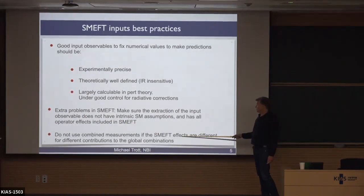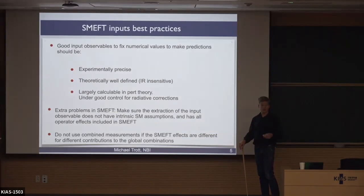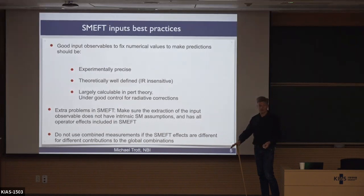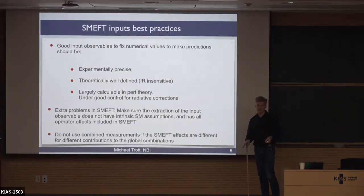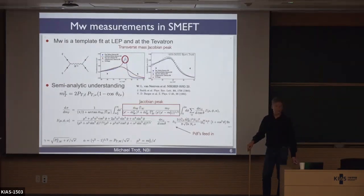The observable has to be interpretable in the EFT itself without other problems coming in, which makes it a good input observable. You have to be careful about that. But because we have this technology in terms of the standard model EFT Lagrangian, we can actually answer that — we can check these things compared to the standard model interpretation. Sometimes with input observables you don't use one measurement but a combination from different experiments, which can be fine in the standard model but can change when you have the EFT, because individual measurements of the same parameters can have different operator dependence.